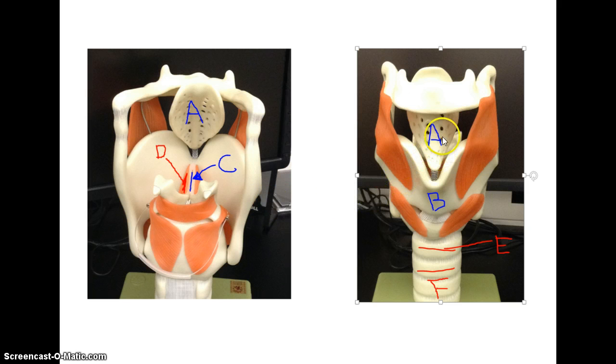So again, this is the larynx, you have the epiglottis, the thyroid cartilage, you have the trachea here, and you have the C-rings. Here you have the glottis, the opening, you have the epiglottis, and the vocal folds. So that is the larynx.